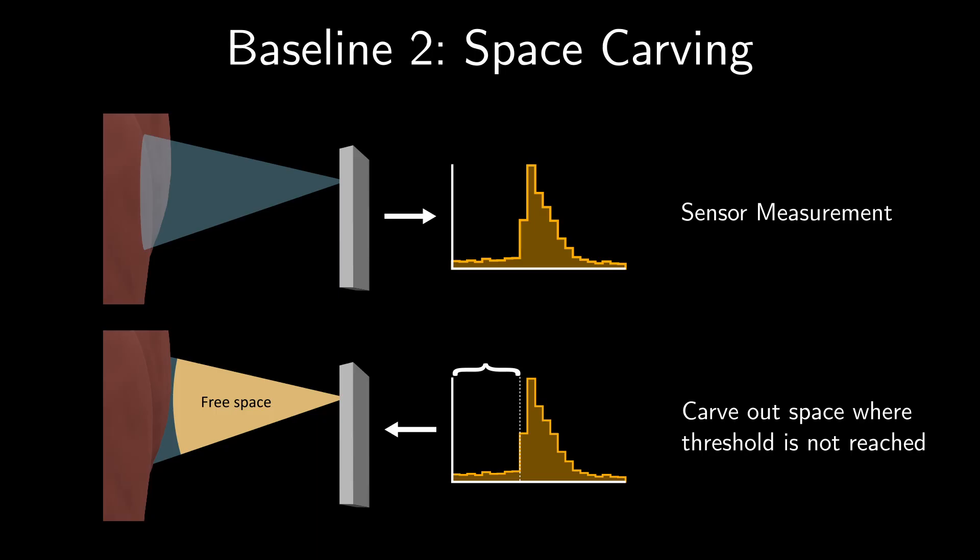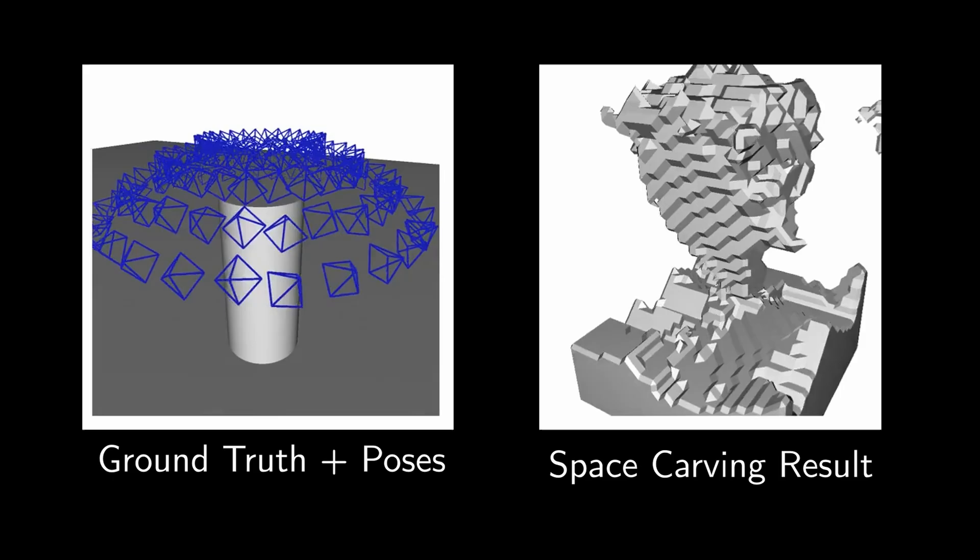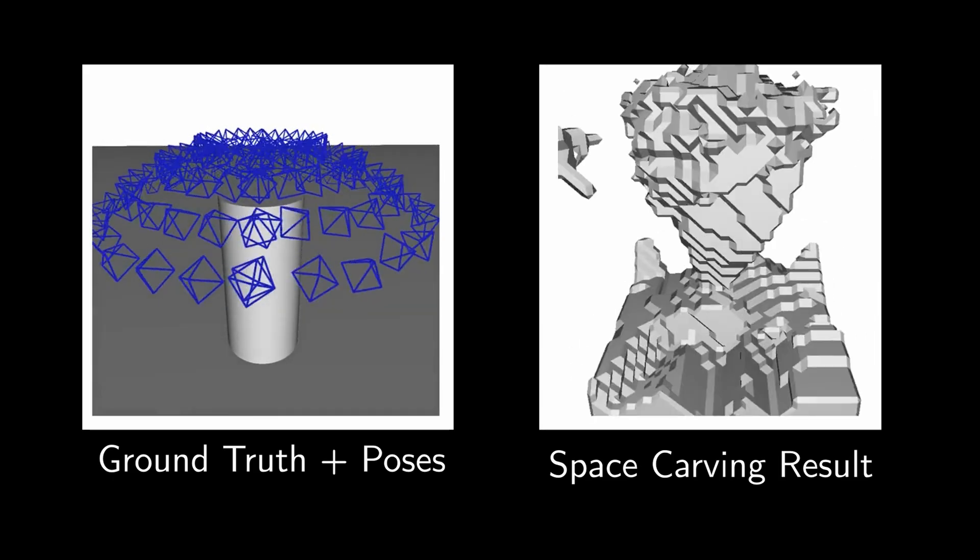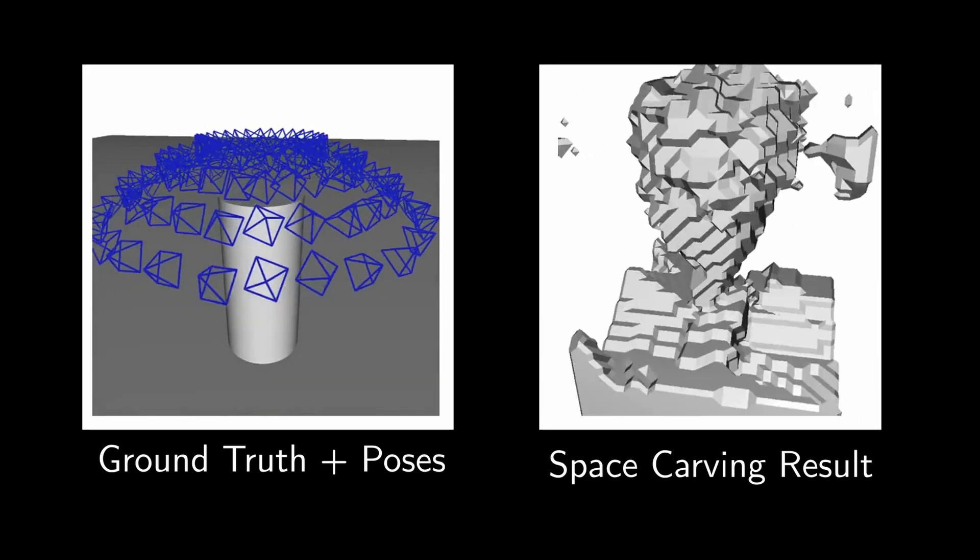In practice, it is impossible to find a fixed threshold that works well for all scenes. In the case of our toy container, some volume of the container is carved away, and the resulting scene does not resemble the true shape.